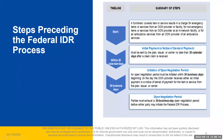Let's get started with the steps preceding the IDR process. There are several steps parties must go through prior to the start of the federal IDR process. When a furnished covered item or service results in a charge for emergency items or services from an out-of-network provider or facility, for non-emergency items or services from an out-of-network provider at an in-network facility, or for air ambulance services from an out-of-network provider. In step two, within 30 calendar days, the initial payment or notice of denial of payment must be sent by the plan, issuer, or carrier.